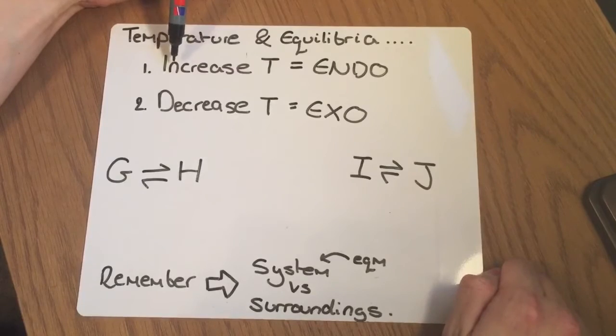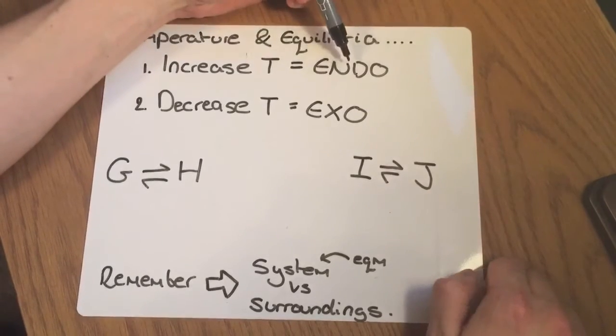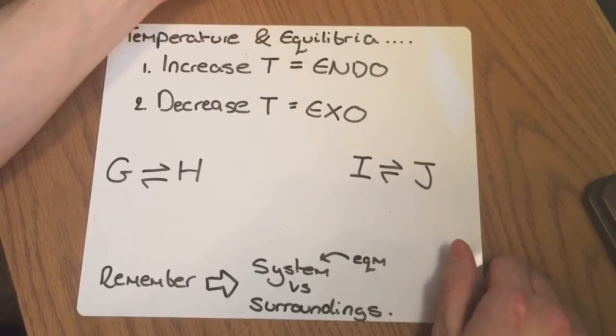For instance, we can't just say, increase the temperature, it's always going to shift to the right. Because it's going to depend on whether the right is the endo or the exo direction.